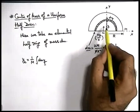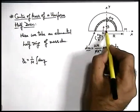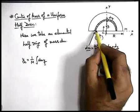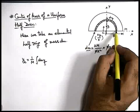That in case of half ring, the center of mass is located at a height 2r/π from the center of the ring. So as the element is in half ring in this situation.